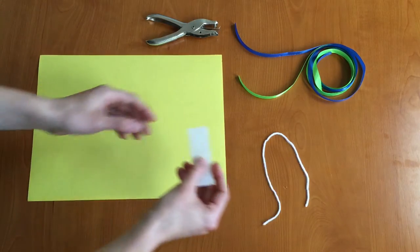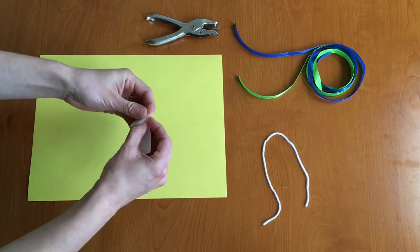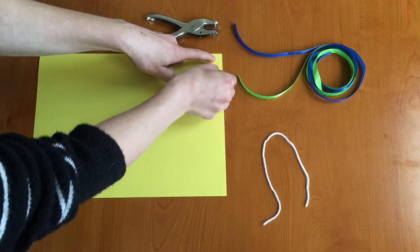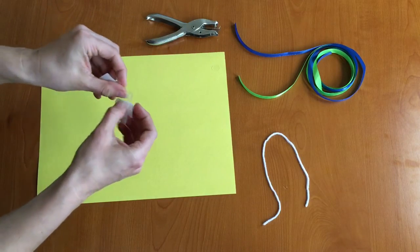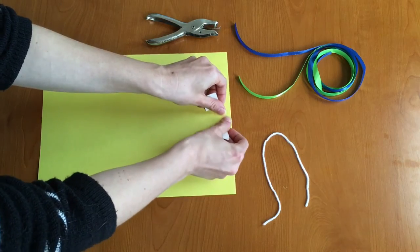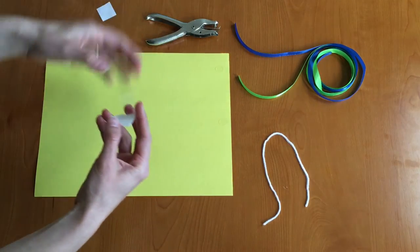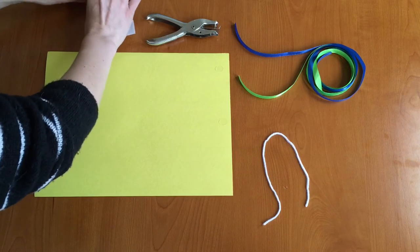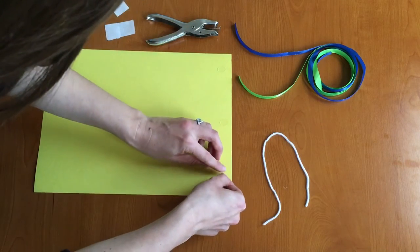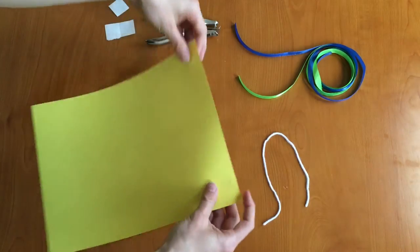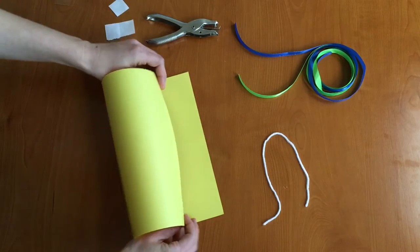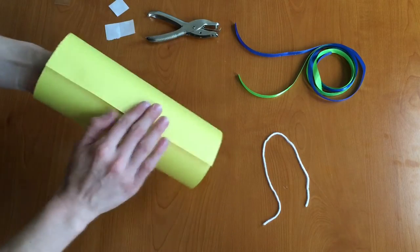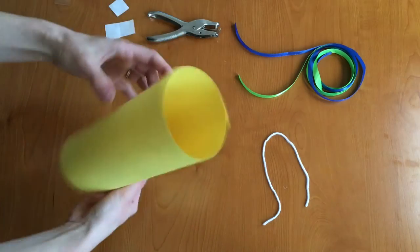So now what we're going to do is we're going to take our three glue dots and we're going to put them right on the edge of our paper. One in the middle, two, and one last one, and three. And now we're going to roll our paper into a cylinder shape and we'll just attach our glue dots there and in the middle and now we have a nice cylinder shape. There we go.